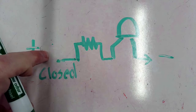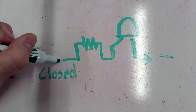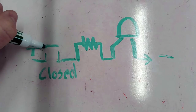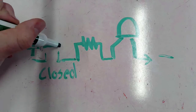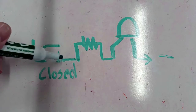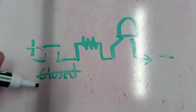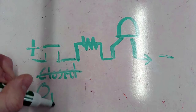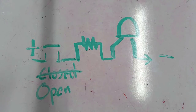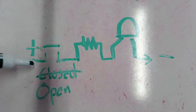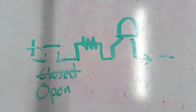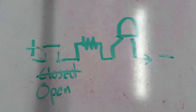When I let go of the button, that conductor is floating above the other conductors, so it's no longer a closed circuit — it's an open circuit. An open circuit means there's a break or interruption in the path, so the current cannot reach the negative.